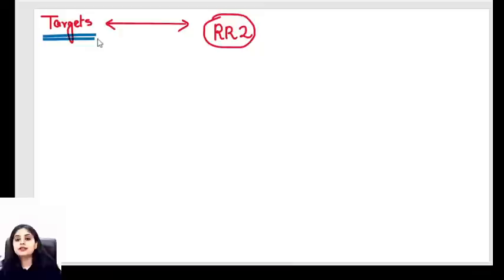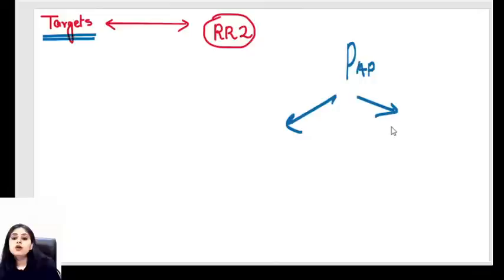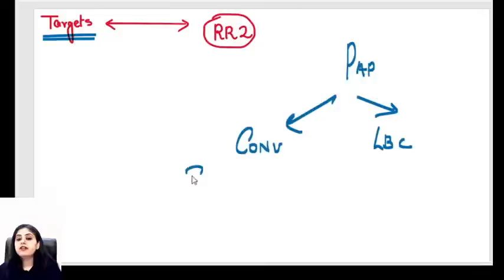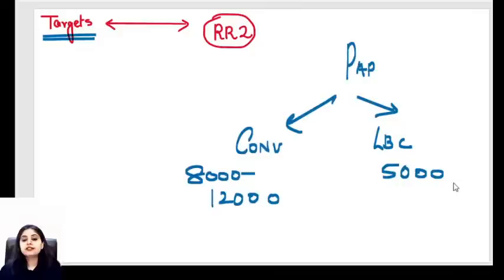For pap smear adequacy: conventional pap smear should have 8,000 to 12,000 cells; liquid-based cytology should have 5,000 cells. Tomorrow we are doing all pap smear photos along with some microbiology photos. Timing remains the same — 7:30 on the YouTube channel.